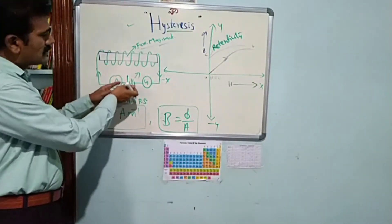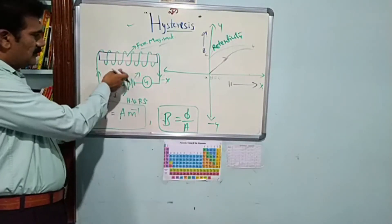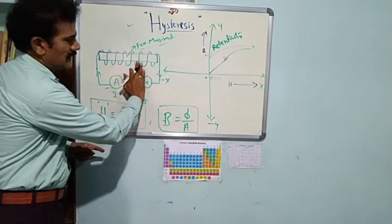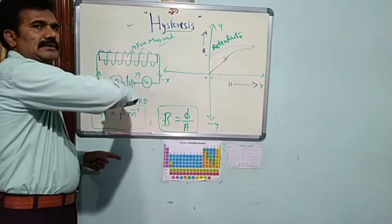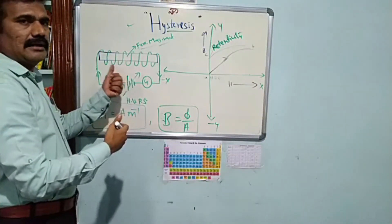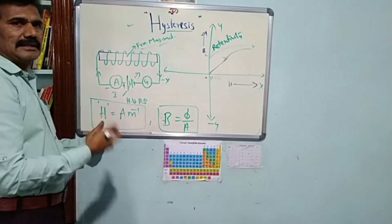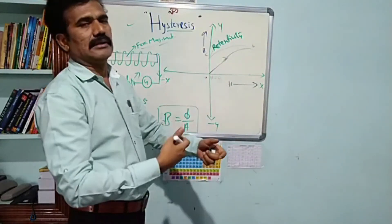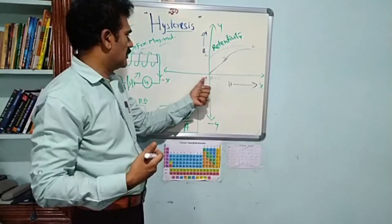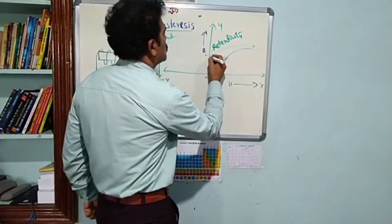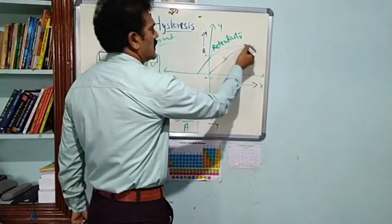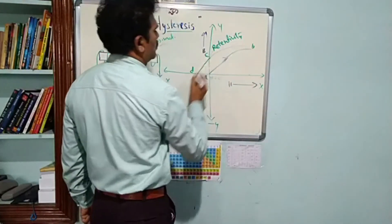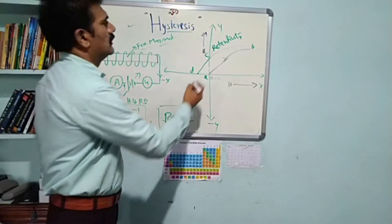Next, we reverse the applied magnetic field by reversing the polarities of the battery and ammeter, applying current in the opposite direction through the coil. The galvanometer confirms the current reversal by showing deflection in the opposite direction. As the reversed magnetic intensity is applied, the dipoles start rotating in the opposite direction. The curve continues from C to D.